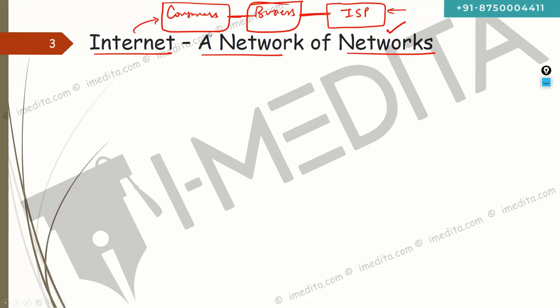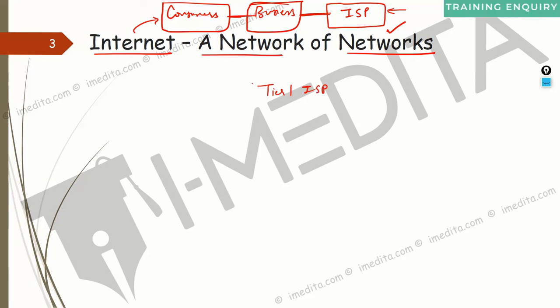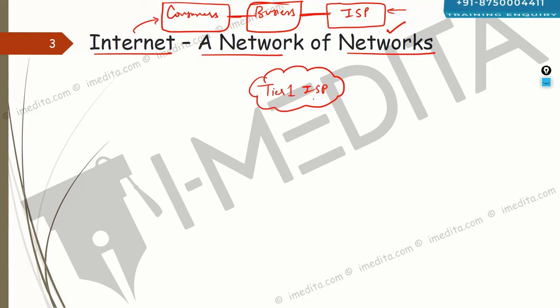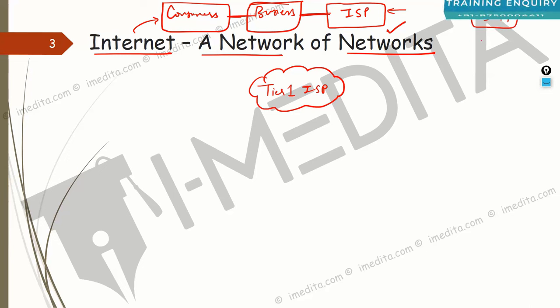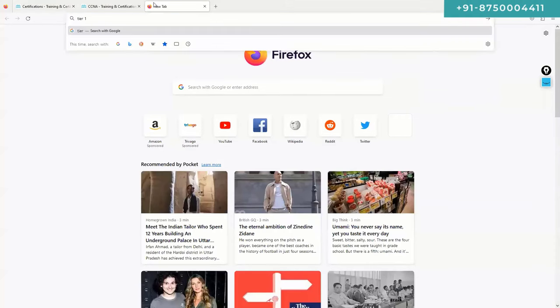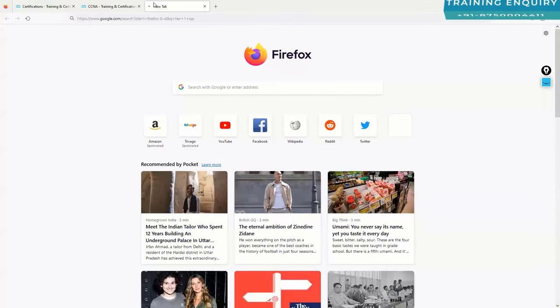Looking at the current architecture of the internet, there are tier-one ISPs — very big internet service providers. There are only around 13 to 14 tier-one service providers in the world. Companies like AT&T, Comcast — mostly from the US — and in India, Tata Communications. You can see the massive scale from their fiber kilometer routes. AT&T has an enormous amount of fiber deployed worldwide.